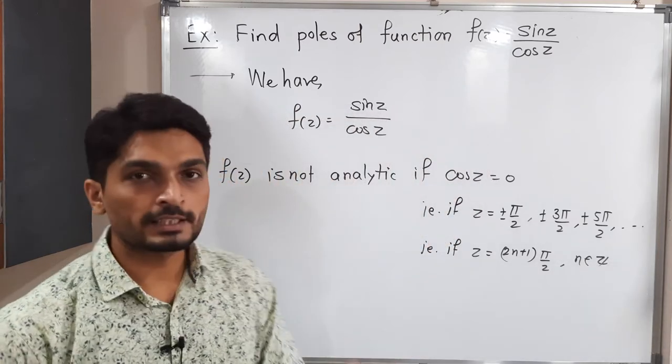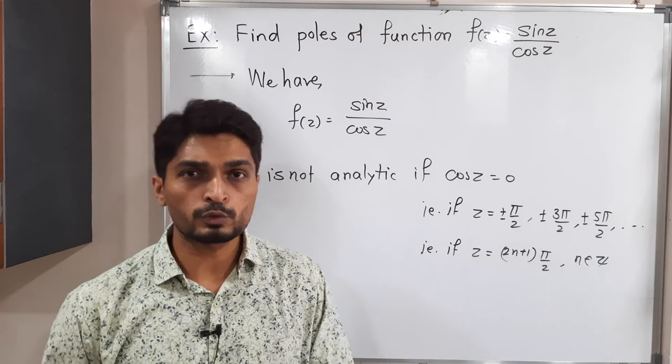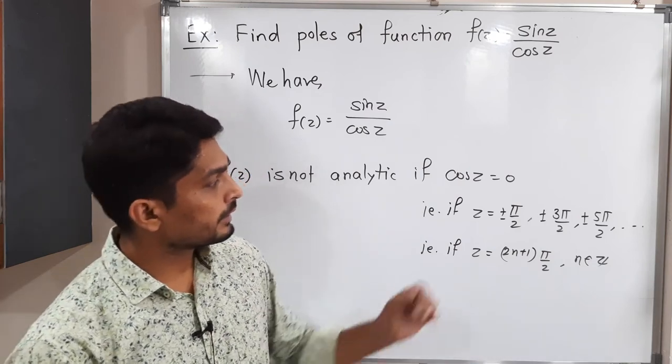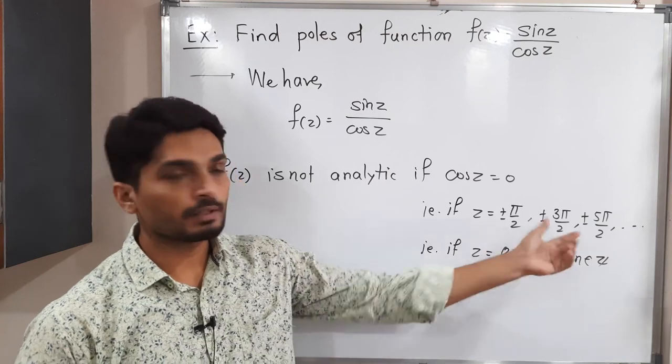That means you can put n equals 0, 1, 2, 3, or you can put n equals minus 1, minus 2, or plus 1, 2, plus 3. So if you put all these values, you will have the same numbers.